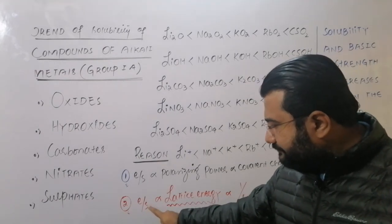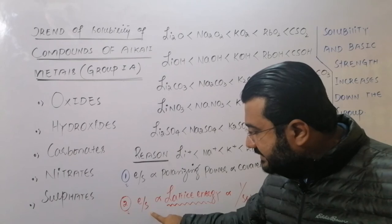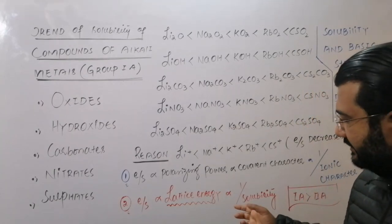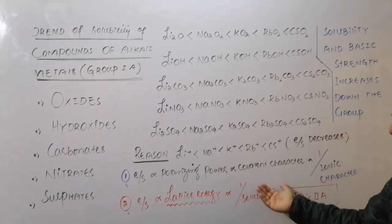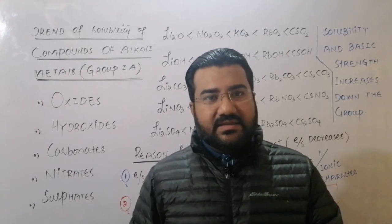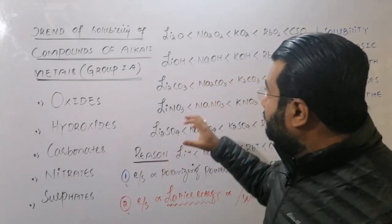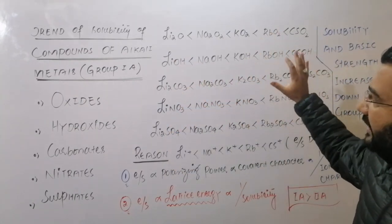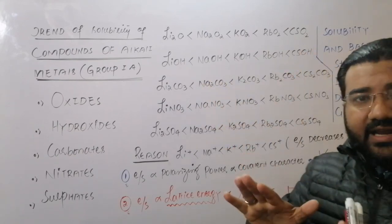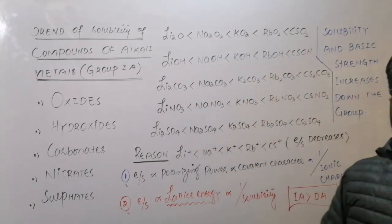Lattice energy also depends on charge density. Going down the group, as ionic size increases, charge density decreases, and therefore lattice energy also decreases. When lattice energy decreases, solubility increases. As we move from top to bottom, decreasing charge density lowers the lattice energy of these ionic compounds, making their lattice easier to break when dissolved in solvent, so solubility keeps on increasing.